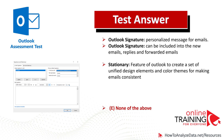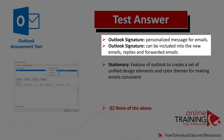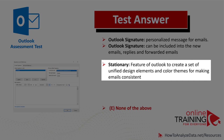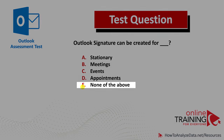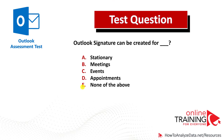Stationery is a feature of Outlook to create a set of unified design elements for emails. You can access Personal Stationery in the same Signatures and Stationery dialog box. Signatures cannot be created for stationery. So the correct choice here is Choice E, none of the above. Outlook signatures can be included in new emails, replies, or forwarded emails. Because signatures cannot be created for meetings, events, appointments, or stationery, the correct answer is Choice E, none of the above.